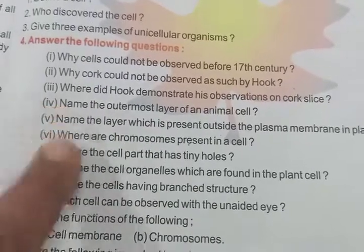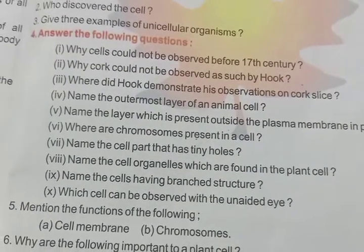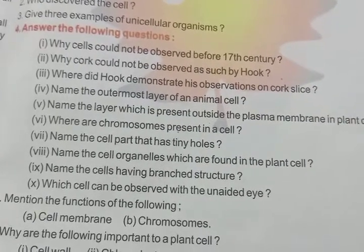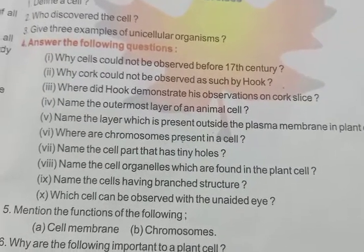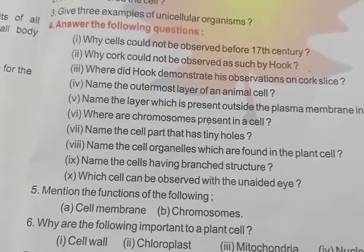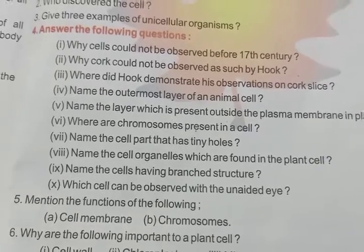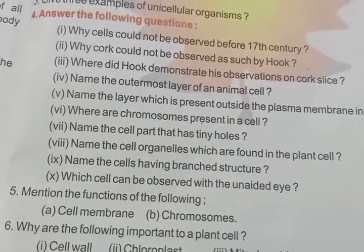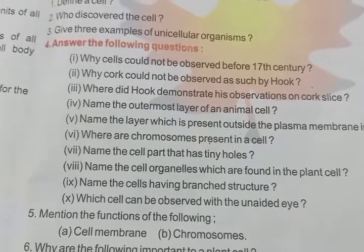Name the outermost layer of an animal cell — that is called cell membrane. Name the layer present outside the plasma membrane in a plant cell. Cell membrane is also called plasma membrane, and in plant cells, outside the plasma membrane there is also a cell wall. So the answer for that is cell wall. Chromosomes are present in the nucleus. The cell part that has tiny holes is the cell membrane or plasma membrane — because it has tiny holes, it permits material to move in and out. If you go through the notes one more time, this will all come back to you.